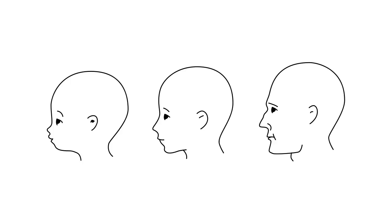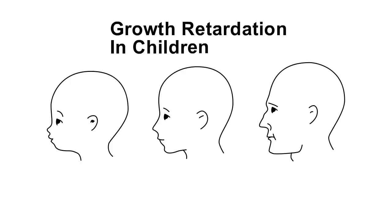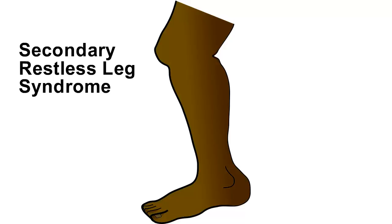Growth retardation in children. Secondary restless leg syndrome — some cases of restless leg syndrome are associated with Iron Deficiency Anemia. So this was about the complications of Iron Deficiency Anemia.